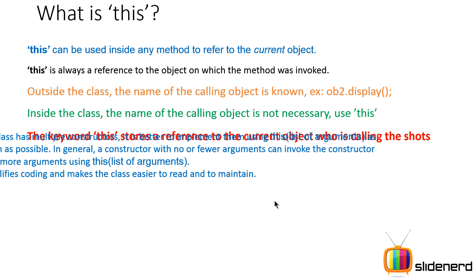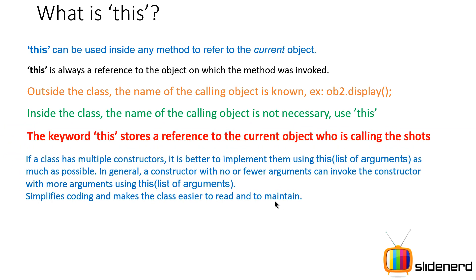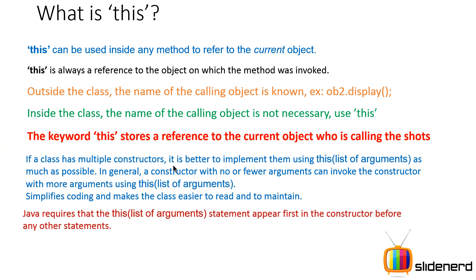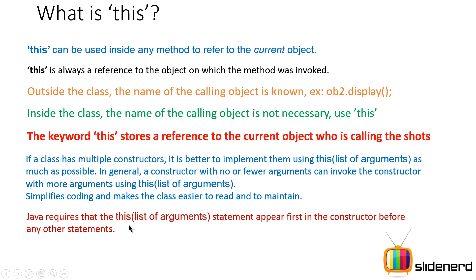One important thing to remember is that the 'this' keyword is also part of constructor overloading. We'll talk about how to make better constructors using 'this', but remember: if you have a class with several constructors taking different types of arguments and you want your code to be flexible and maintainable, the first statement in that constructor should be the 'this' keyword itself.